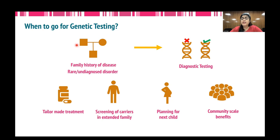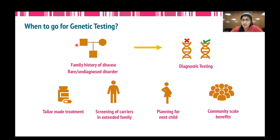Talking about clinical genetic testing, one obvious question is: when should one actually go for genetic testing? First and foremost is the family history of disease. When a patient presents to a clinic and the clinician asks for the family history and maps the family members on a pedigree, he or she might suspect a genetic pattern of disease in the family, meaning multiple affected members across generations. This is indicative of a genetic disorder and such cases should definitely be considered for clinical genetic testing.